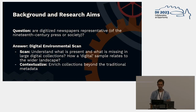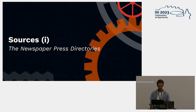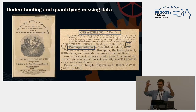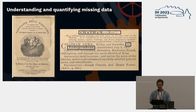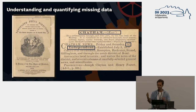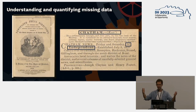We also try to contextualize this newspaper collection by enriching it with relevant metadata that goes beyond the traditional metadata in newspaper collections. To do this — both to scan the landscape and enrich the data — we used a source called newspaper press directories. Published from 1846 onwards, almost annually, it's a very detailed source of all newspapers that circulated in Britain. For each newspaper, it gives a detailed description: the title, how much the newspaper cost, its politics, how old it was — quite a detailed profile of each newspaper.